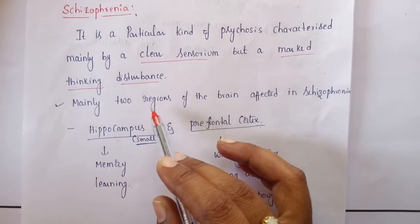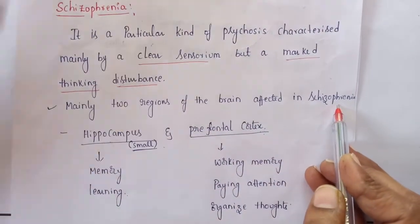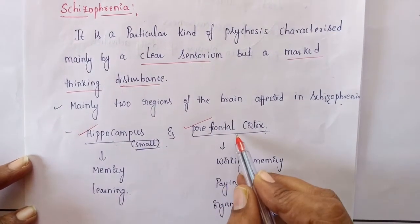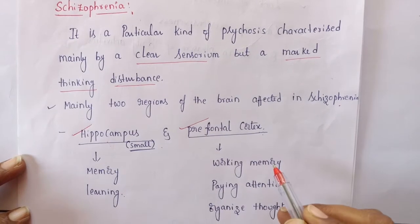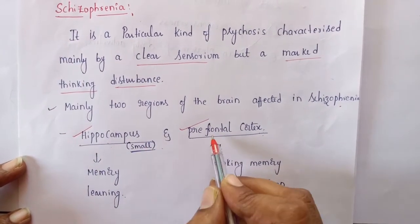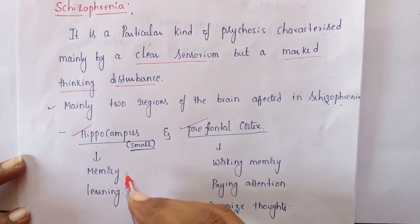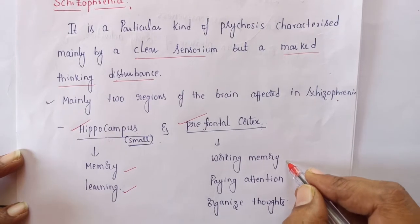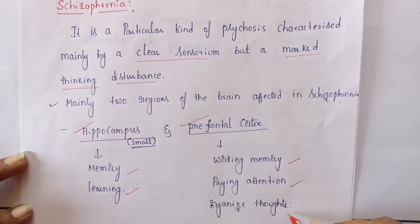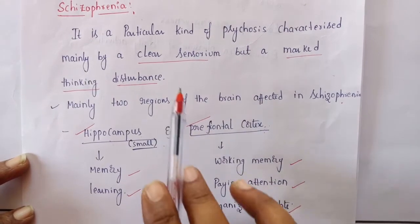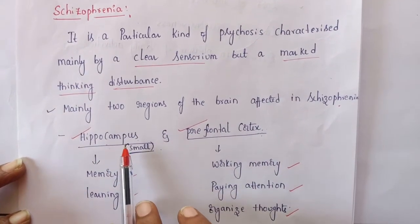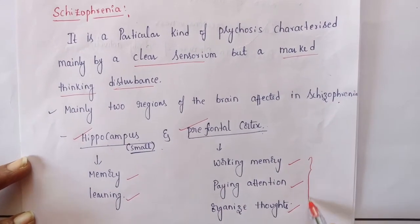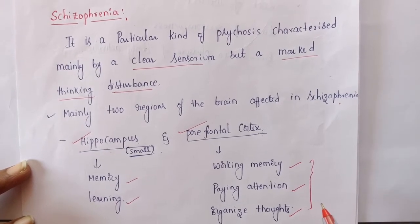Majorly in schizophrenia, two regions of the brain are affected: the hippocampus and the prefrontal cortex. The hippocampus is responsible for memory and learning, whereas the prefrontal cortex is responsible for working memory, paying attention, and organized thoughts. When a person develops schizophrenia, dysfunctioning of the hippocampus and prefrontal cortex leads to the various changes we observe as symptoms.